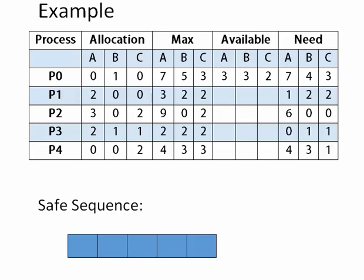P0 is on hold; we check P1. P1 requires 1 2 2 and we have available 3 3 2, so it is possible to fulfill the request of P1. After P1 is completely executed, P1 releases its allocated resources, which are 2 0 0, so our new available resources will be 3 plus 2 = 5, 3, and 2.